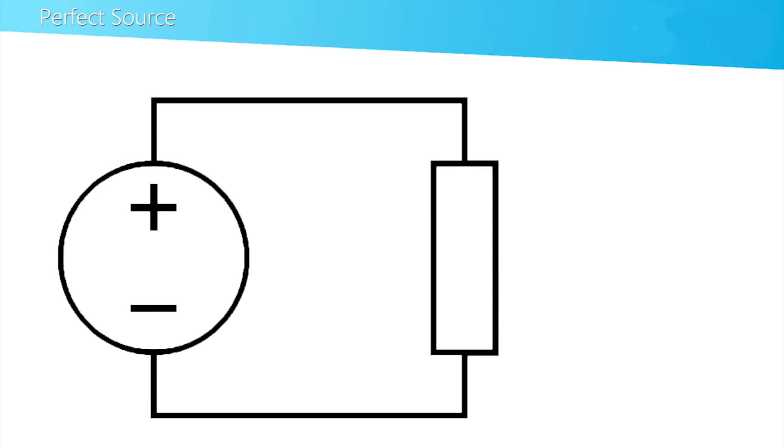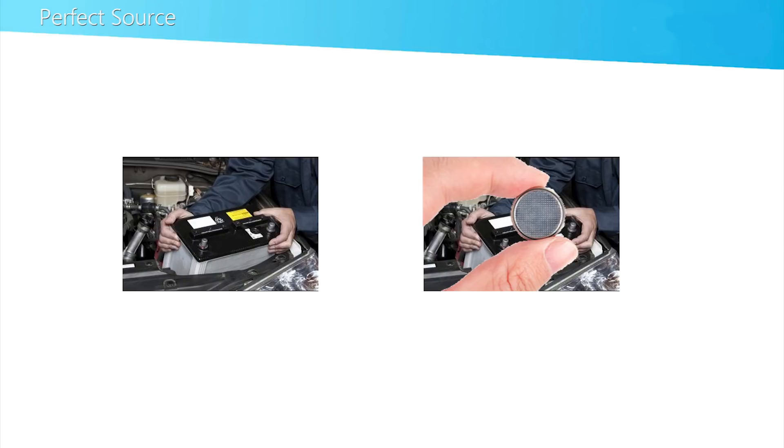The resistor here can be termed a load. A light load takes a small current and a heavy load drains a lot of current. Here is an example of a reasonably heavy load current.